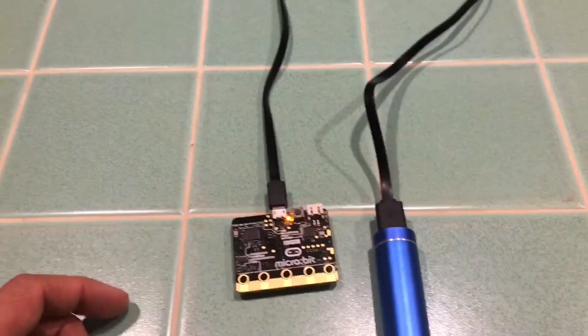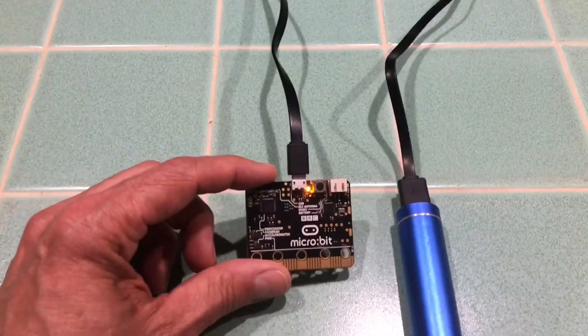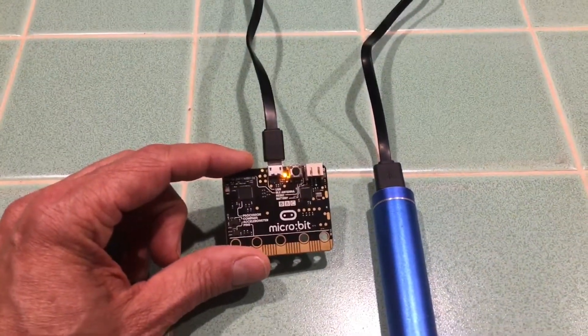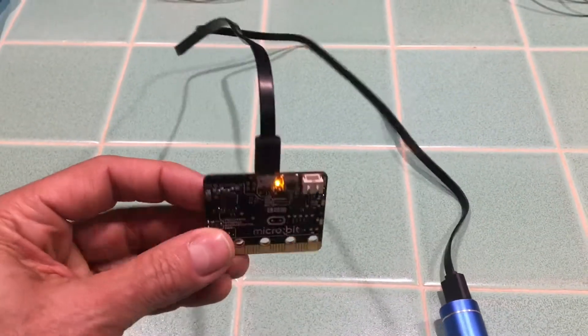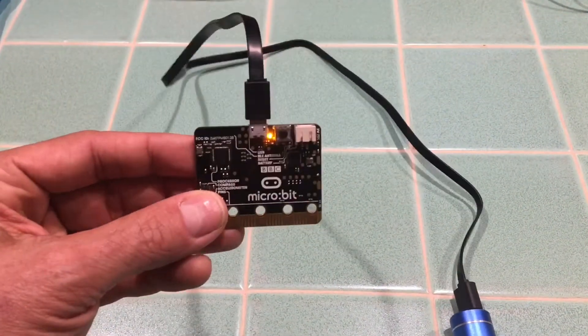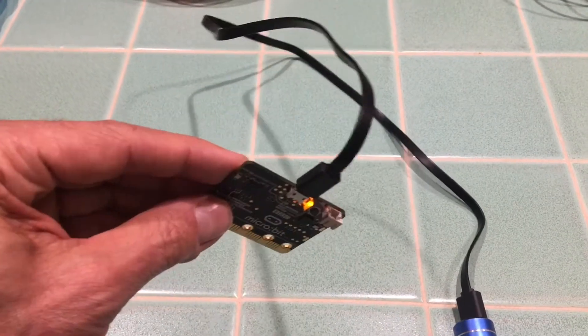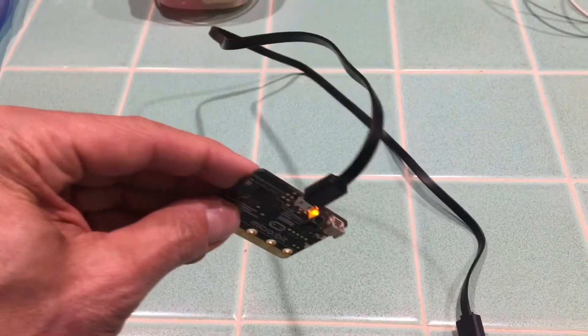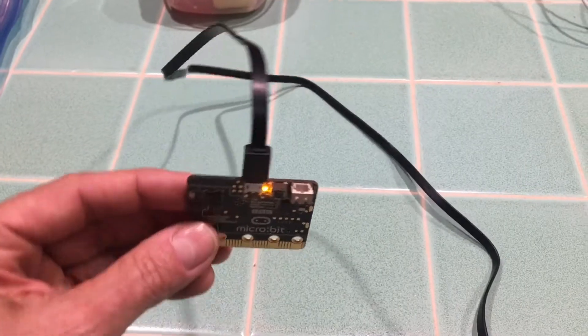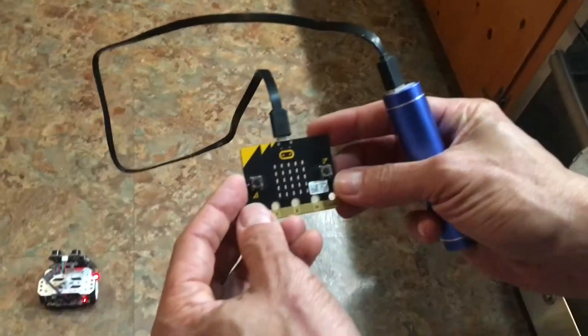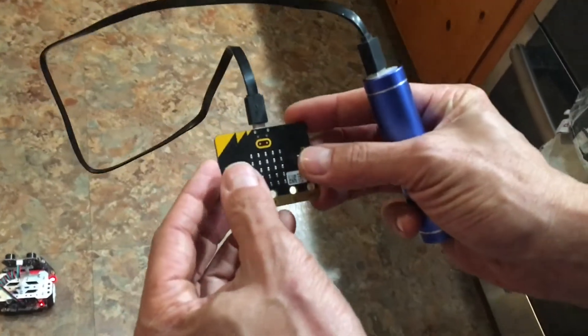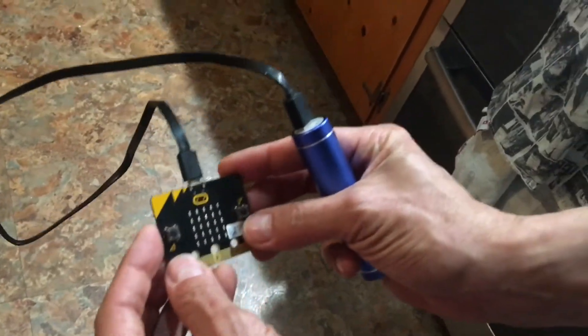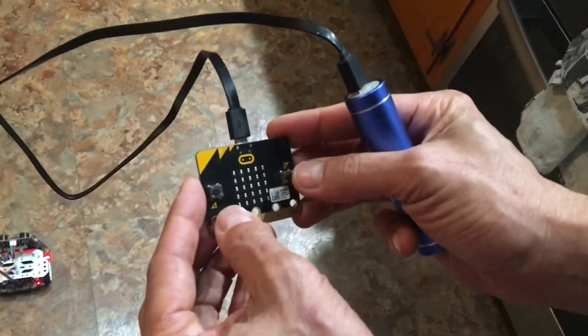So this microbit is all loaded up with the transmitting program which is very simple. If the microbit is tilted this way it will control the speed of the robot and if it's tilted this way it will turn the robot right or left. And I put a start and stop on the robot by pushing both buttons at the same time. So when I push both buttons it will start the robot.